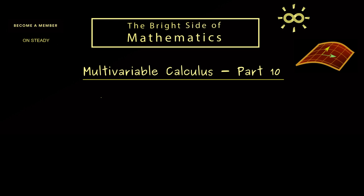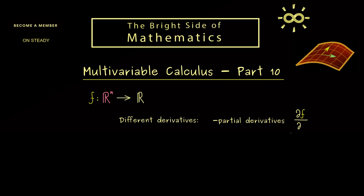In this video, as often, we will look at a function f from R^n into R — in other words, the function depends on n variables. From former videos we know that for such a function we have different possible derivatives. First, in part 4, we found the partial derivatives denoted by df/dx_i, evaluated at a point x̃. Then in part 5, we defined the more powerful total derivative, which can be represented by the Jacobian matrix or by the gradient.